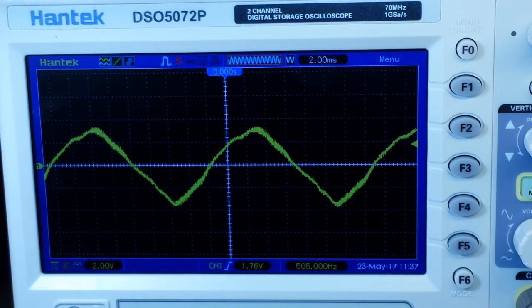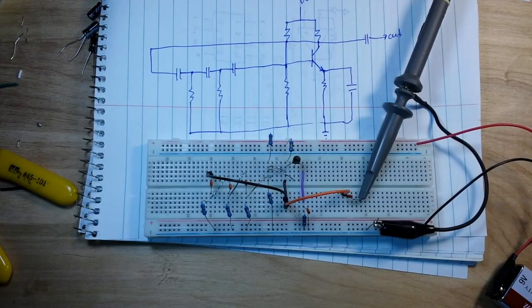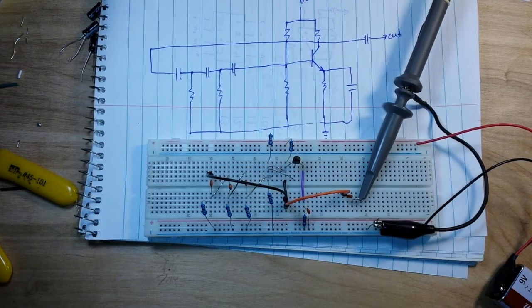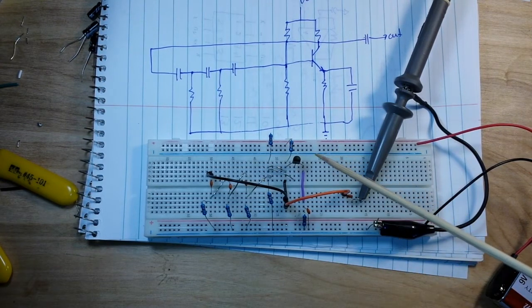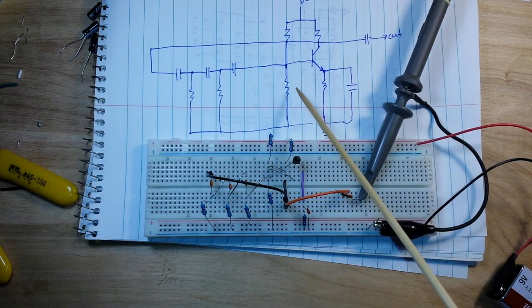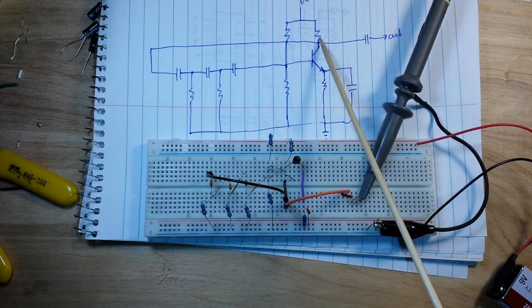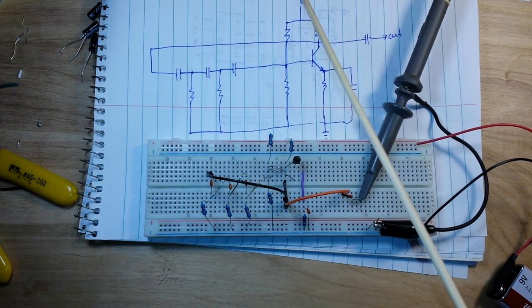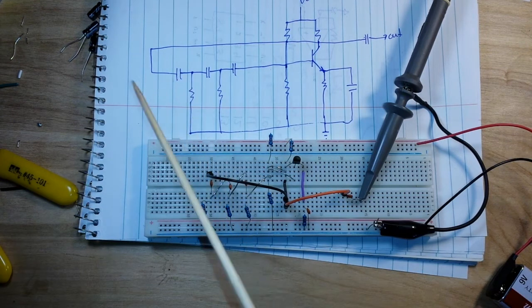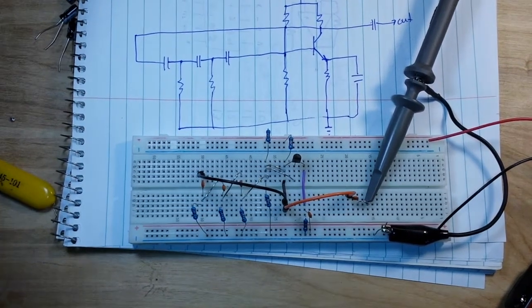But you can also do it with a transistor, let's take a look at that. All righty, here is the phase shift oscillator running with a transistor instead of the op amp. Here is the schematic for it up here. All of our resistors again are 10k and all of our capacitors are ceramic 35 picofarad.